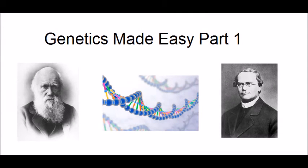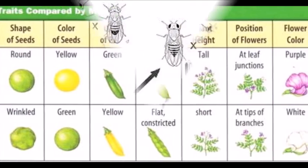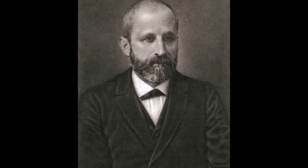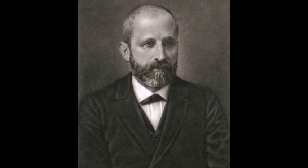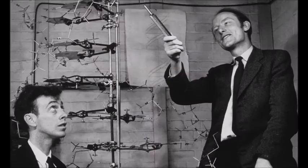This series will cover some of the basic principles of genetics and how these principles were discovered. It will cover many of the most significant experiments, from Gregor Mendel's work on plants which discovered the laws of inheritance to Thomas Hunt Morgan's work on fruit flies. It will cover the history of DNA research from its initial discovery to the elucidation of its structure by Watson and Crick to the modern-day world of genome sequencing.